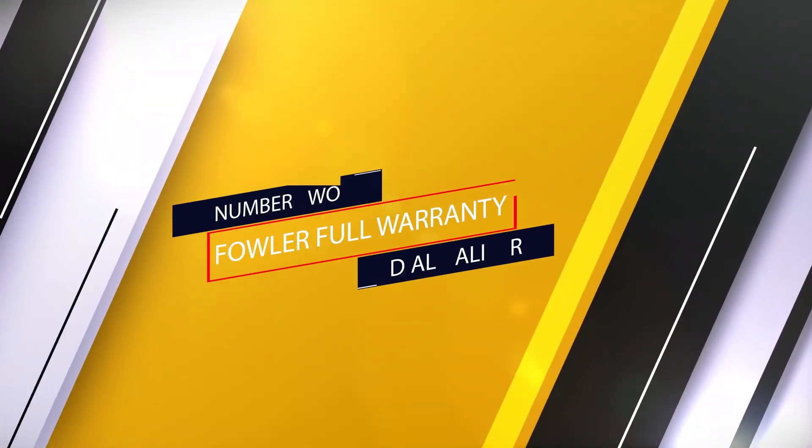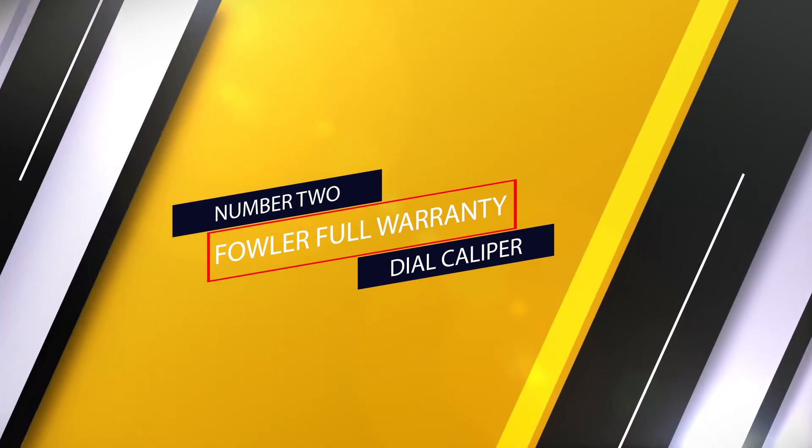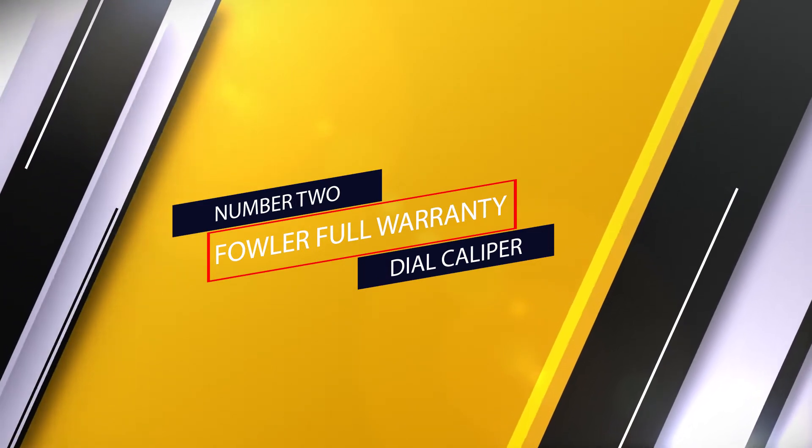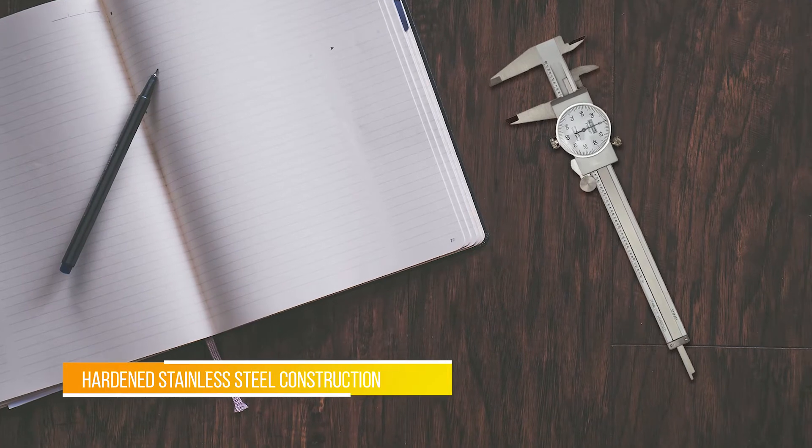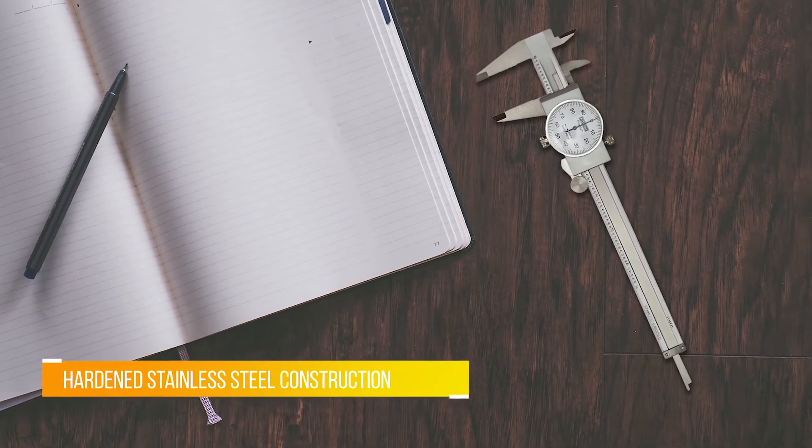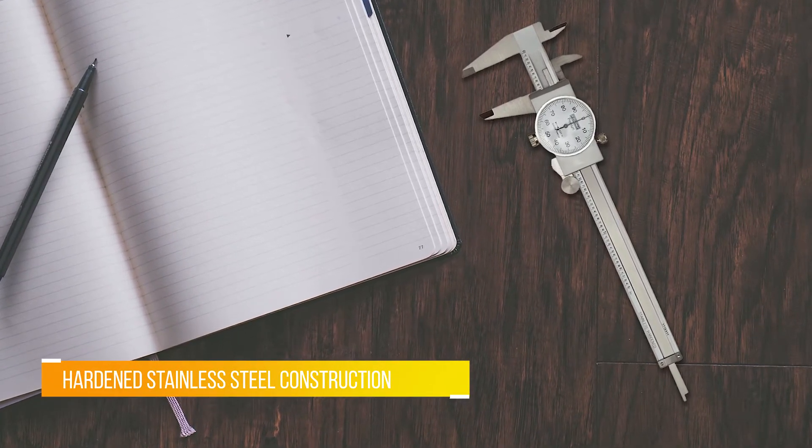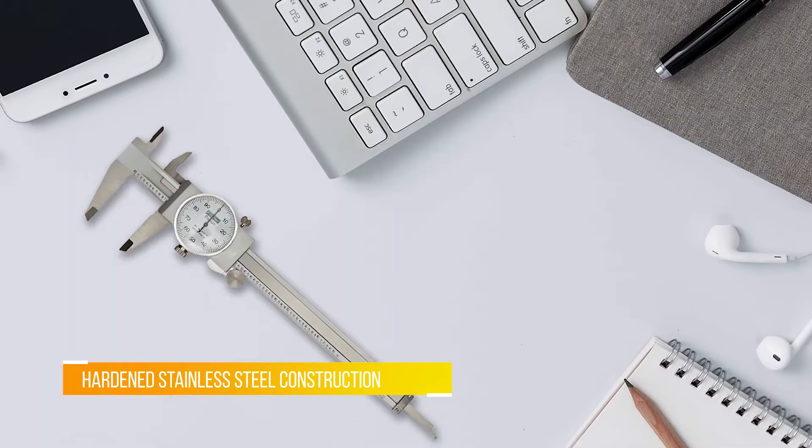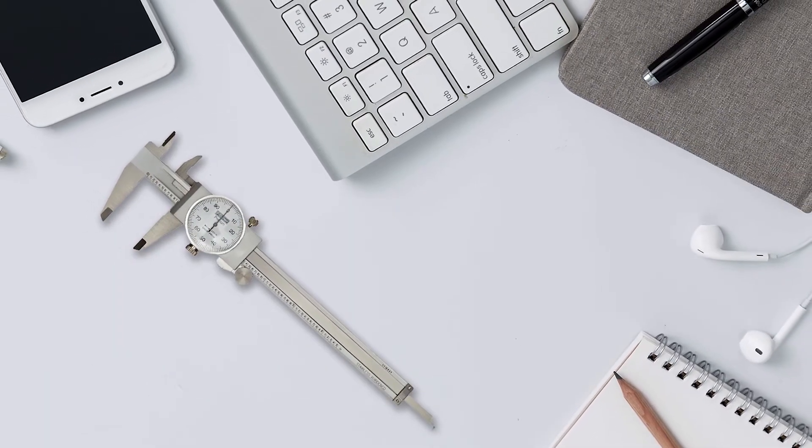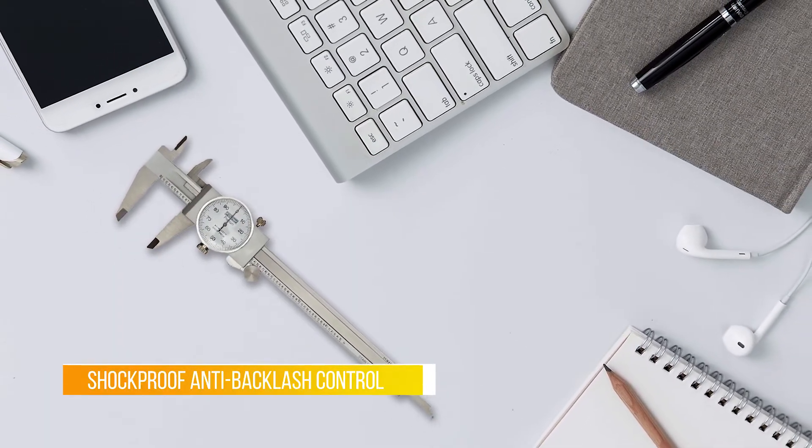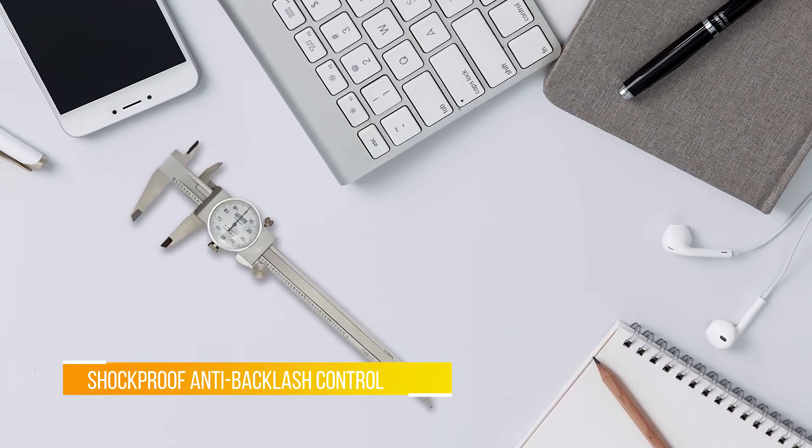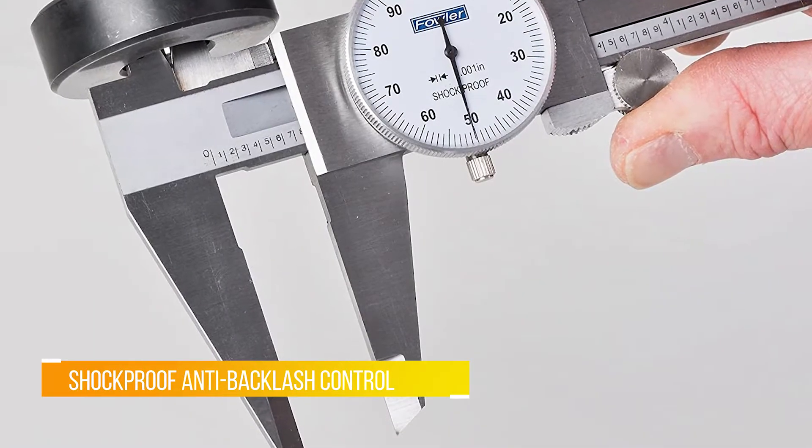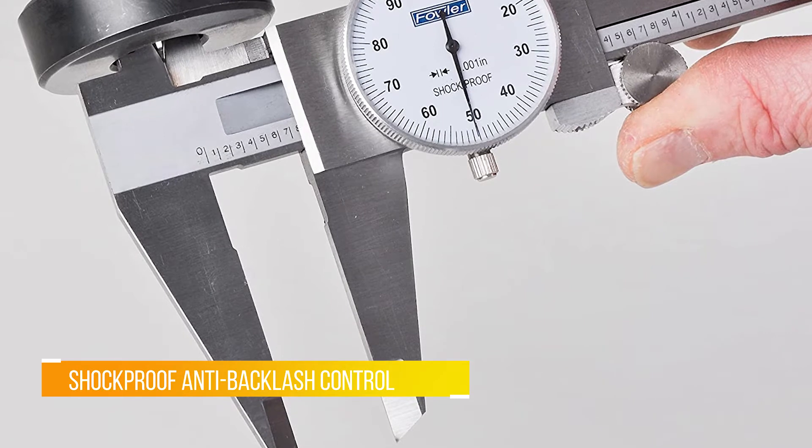Number two: Fowler full warranty dial caliper. One of the only models reviewed that takes both metric and imperial measurements, the Fowler 52-030-006 APPX reads with an accuracy of 0.0005 inches or under 0.02mm. Ceramic-coated contact points keep it accurate even when used in high heat settings like engine bays or workshops.